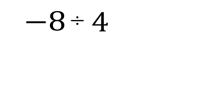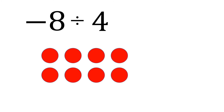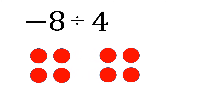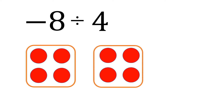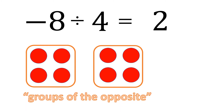Now how about negative 8 divided by positive 4? Let's visualize negative 8 as 8 negatives, and then group them by 4. We have the first group and the second group — 2 groups. But these 2 groups are not groups of 4 positives; instead, they are groups of 4 negatives, or groups of the opposite. Since it is not the group we are looking for but the opposite, we put a negative sign on the quotient.